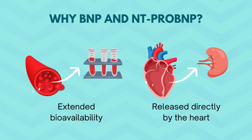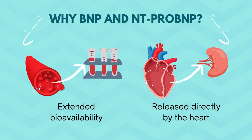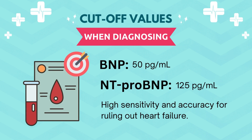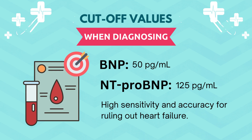These two markers also have greater clinical significance because they are released directly from the ventricles of the heart. Thus, they provide an accurate measure of the degree of impact on the heart itself during heart failure. These biomarkers have been shown to have high pooled sensitivity and a low pooled negative likelihood ratio, meaning that concentrations of BNP and NT-proBNP within appropriate cutoffs can accurately rule out the presence of heart failure with a high degree of confidence.